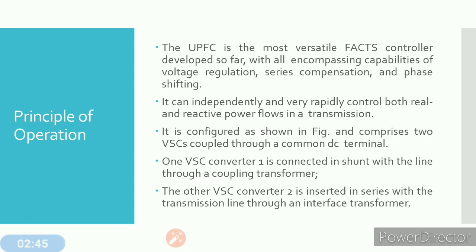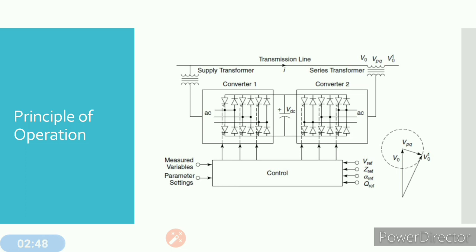The other VSC, Voltage Source Converter two, is inserted in series with the transmission line through an interface transformer. Converter one is connected with the help of a supply transformer in shunt with the transmission line, and converter two is connected to the transmission line with the help of a transformer. Both converters share a common DC capacitor. Converter one rectifies the voltage taken from the supply transformer and feeds the rectified voltage to converter two.